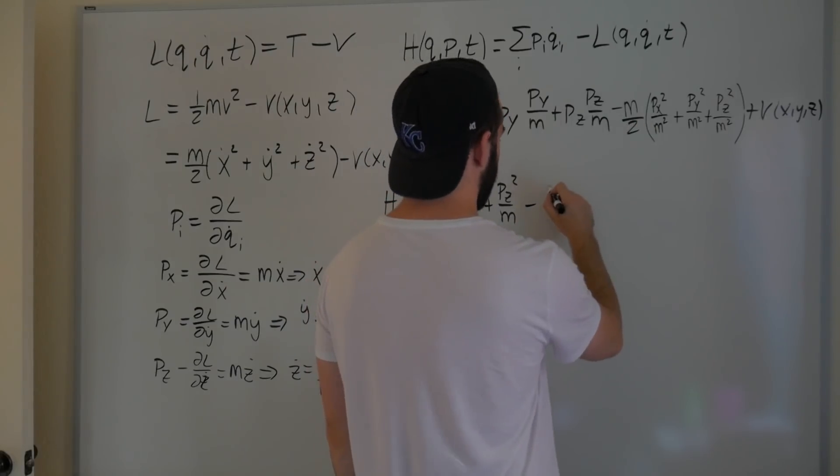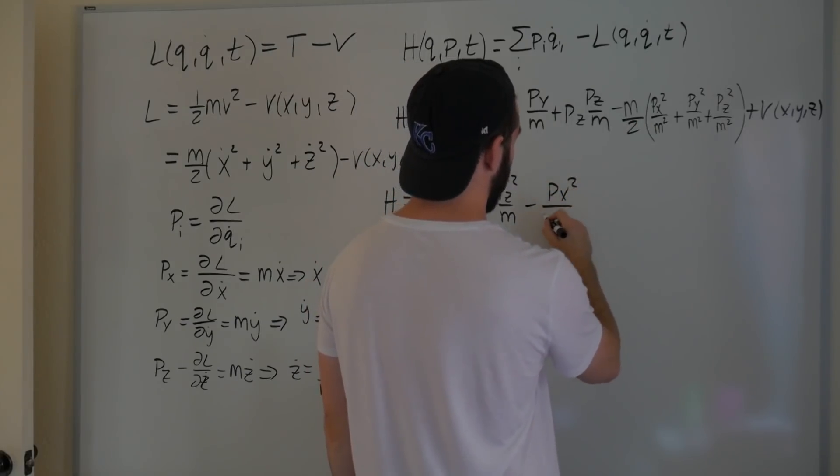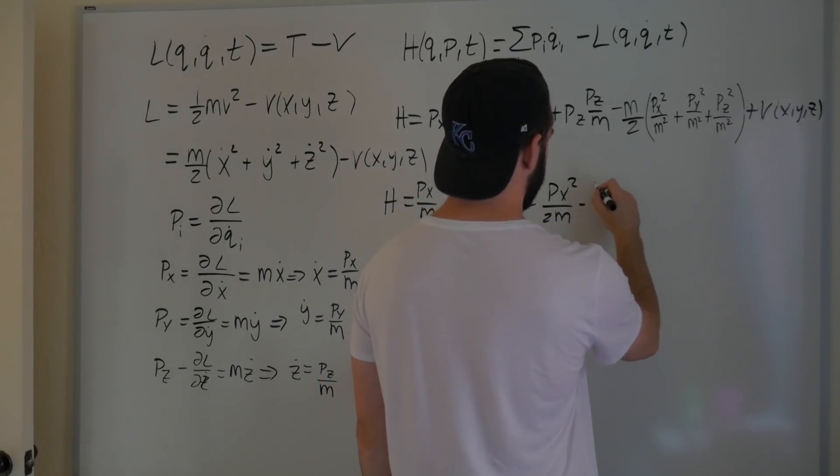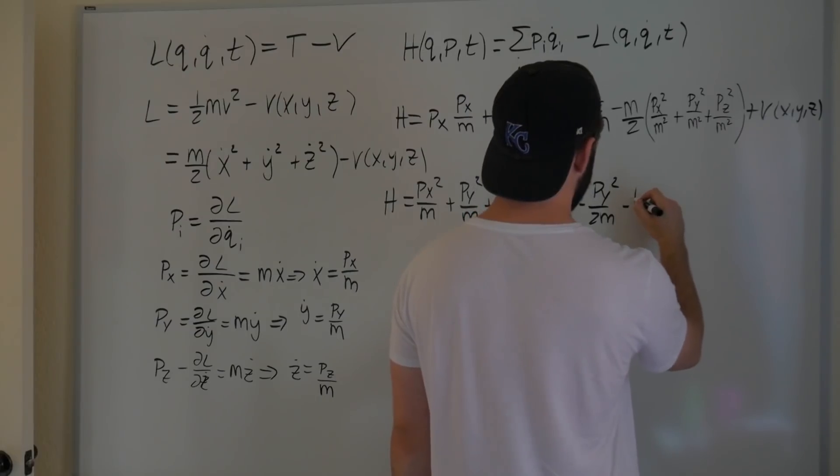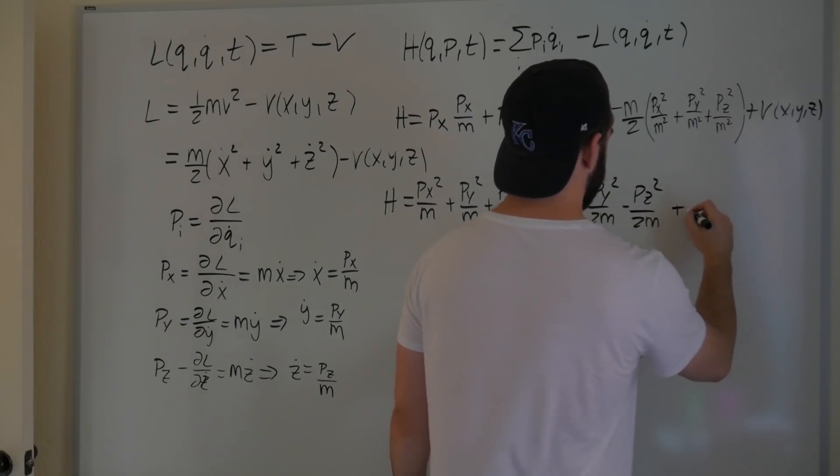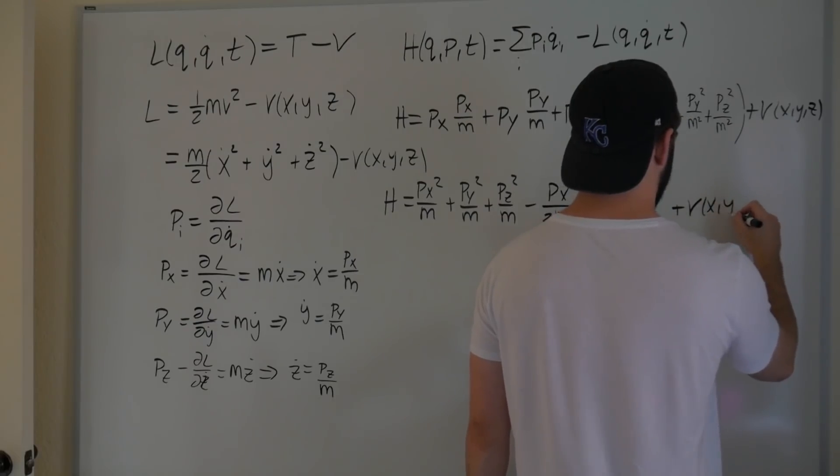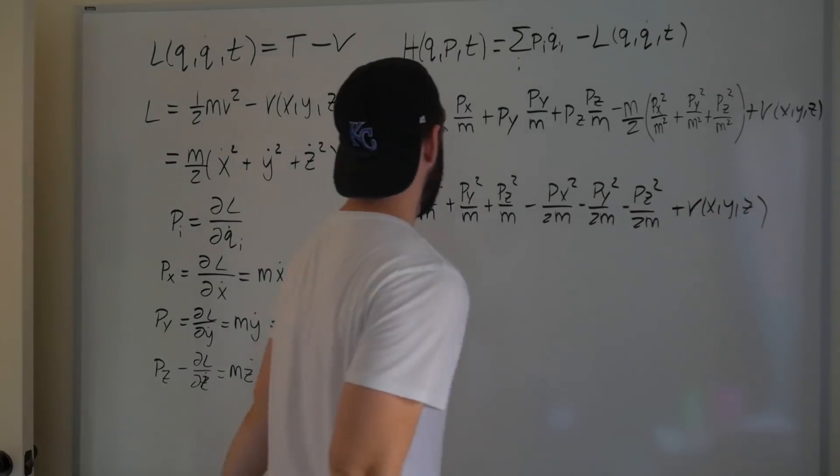One of these factors of m is going to cancel. So this is minus px squared over 2m, minus py squared over 2m, minus pz squared over 2m, plus V of x, y, and z.